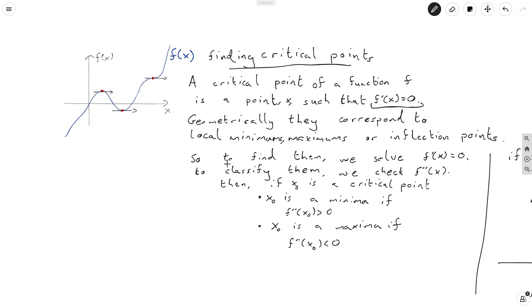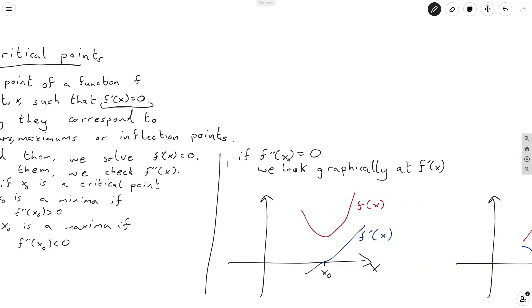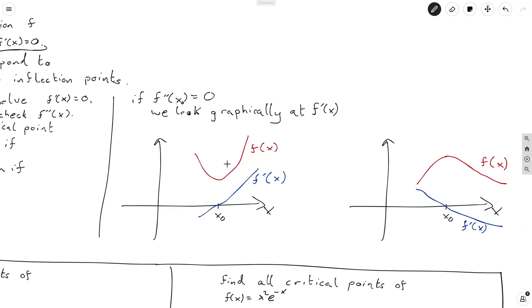And if f double prime of x naught is equal to zero, we have to do some more work. We have to start looking at this graphically — we look at f prime of x around x naught. If the derivative f prime of x is going from negative to positive, that means we've actually got a minima. The reason is that the slope is going from negative — the slope down here is negative because we're going down — to positive, so we're going up. Similarly, if we're going from positive to negative, that means we must have been going up, but then at some point we end up going down, so that must be a local maxima.